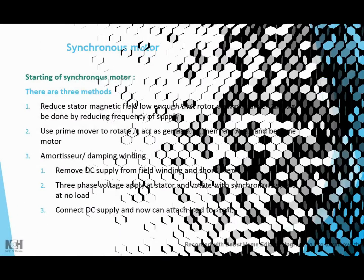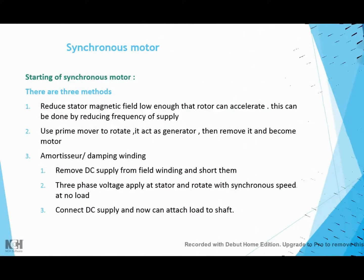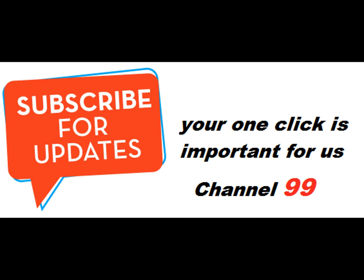There are three starting methods. First, reduce the stator magnetic field low enough that the rotor can accelerate — this can be done by reducing the frequency of the supply. Second, use a prime mover to rotate it, acting as a generator, then remove it so it becomes a motor. Third, use amortisseur damping winding.